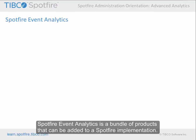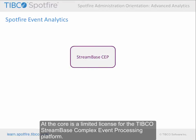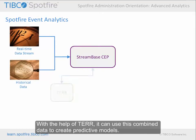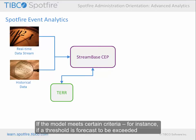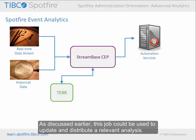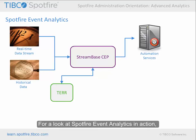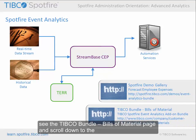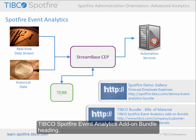Spotfire Event Analytics is a bundle of products that can be added to a Spotfire implementation. At the core is a limited license for the TIBCO StreamBase Complex Event Processing Platform. StreamBase CEP can combine data from real-time streams with historical data. With the help of TAIR, it can use this combined data to create predictive models. If the model meets certain criteria — for instance, if a threshold is forecast to be exceeded — StreamBase CEP can pass data to a pre-configured Spotfire Automation Services job. This job could be used to update and distribute a relevant analysis. For a look at Spotfire Event Analytics in action, see the demo gallery presentation Forecast Employee Expenses. For more details on licensing, see the TIBCO Bundle Bills of Material page and scroll down to the TIBCO Spotfire Event Analytics Add-on Bundle heading.